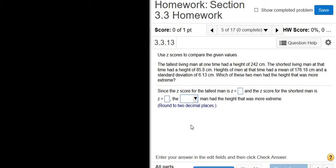Use z-scores to compare the given values. So they're talking about the tallest living man and the shortest living man, and we have to compute the z-scores for the heights of each of these men and then compare the values.